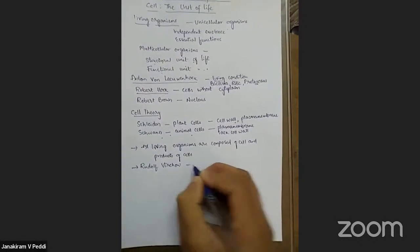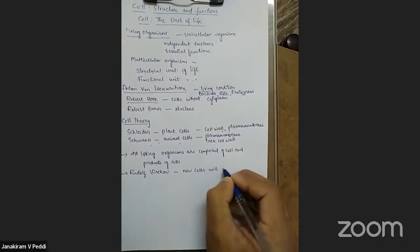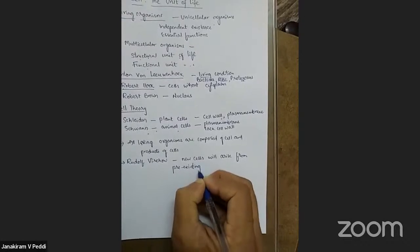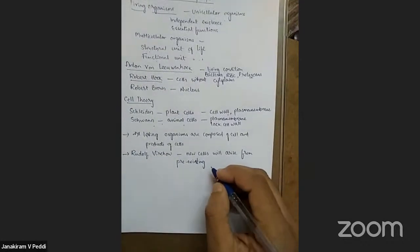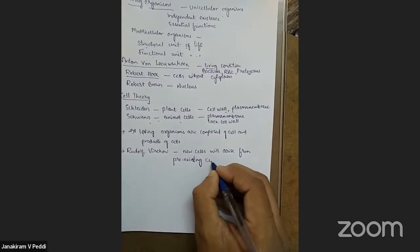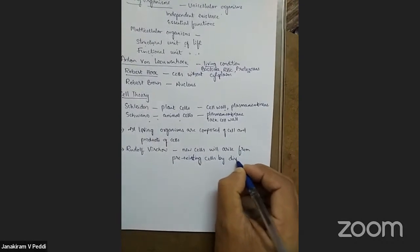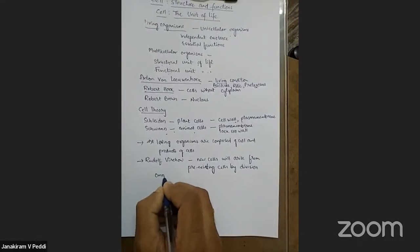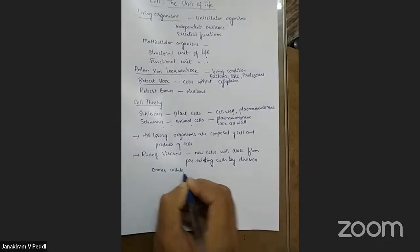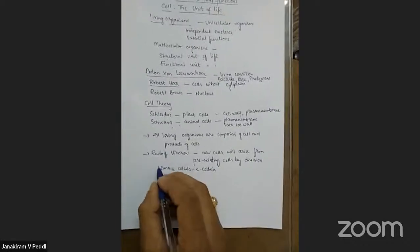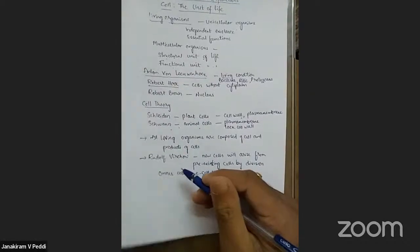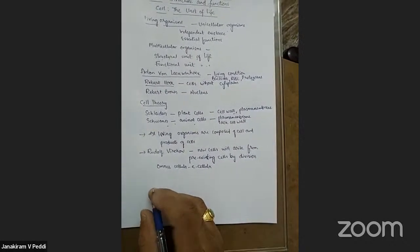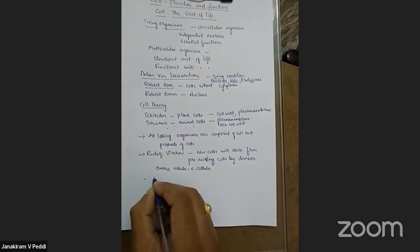Rudolf Virchow later stated that new cells arise from pre-existing cells — cells that already exist — through a process called cell division. This was stated as 'Omnis cellula e cellula.' Schleiden and Schwann could not explain how new cells arise, but Virchow completed the Cell Theory by explaining that new cells form from older, pre-existing cells by cell division.